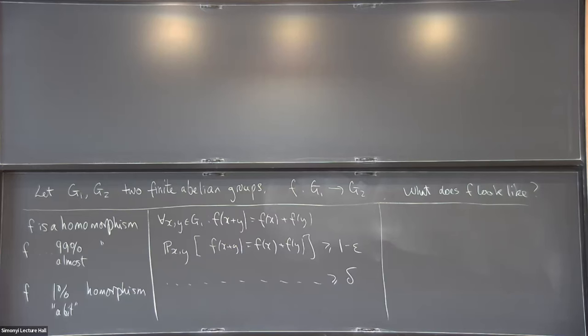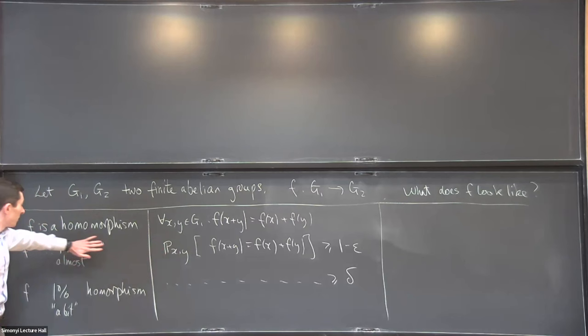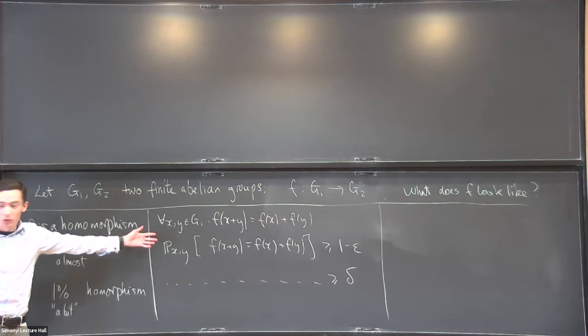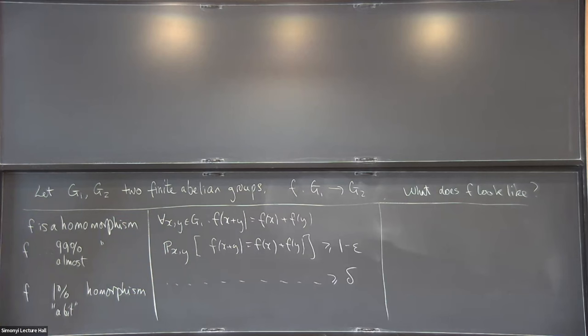Is there a reason you take the group to be abelian? You can ask the same question for non-abelian groups, but my methods won't tell you very much. It's still an interesting question but much harder. For the 99% question, if you think of it as a measure-one homomorphism, then non-abelian is fine — we know lots about this. For the 1% question, non-abelian is much harder.